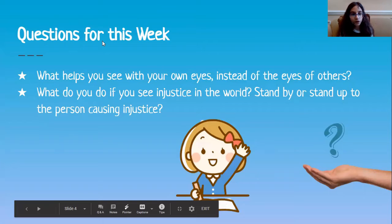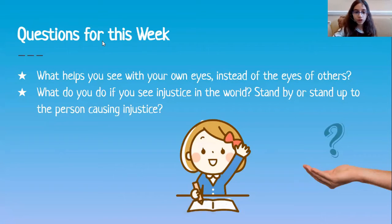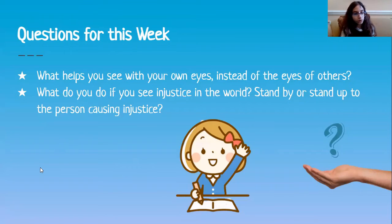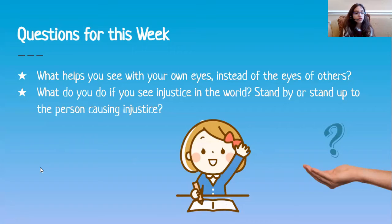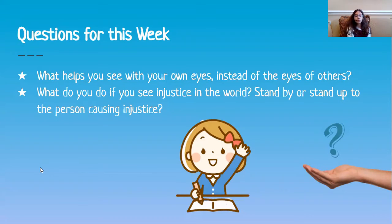Here are the questions we're going to have for this week. The first question is: what helps you see with your own eyes instead of the eyes of others? How you can do this is if you don't listen to other people's rumors. Sometimes they're rumors, and sometimes they're true. That's why you have to go and see with your own eyes to see if something is true, or to see if it's a rumor.